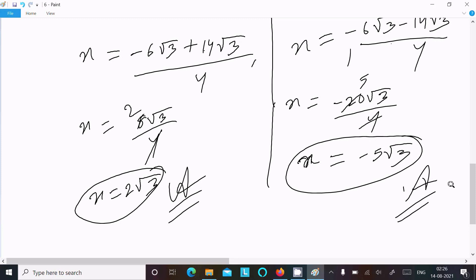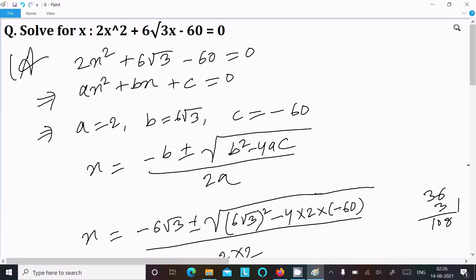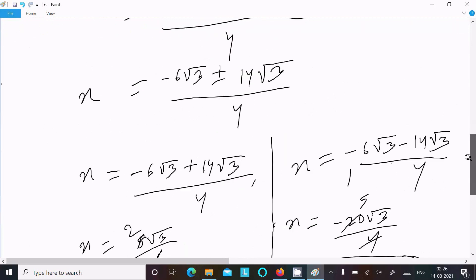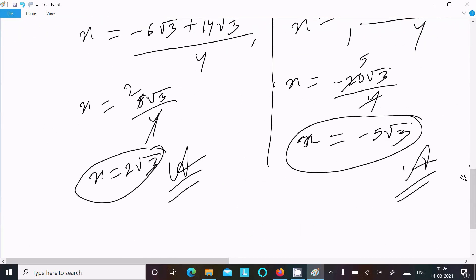So one is x = 2√3, and when I take the negative, x = -5√3. So this is the way we can solve or find the value of x of this quadratic equation by using the formula. So I hope guys this video is helpful for you. Now this video is over, so thanks for watching. See you next time. Thank you.